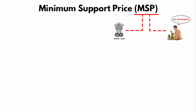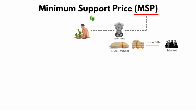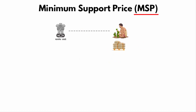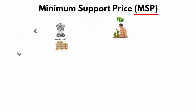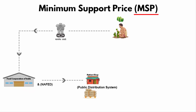MSP means Minimum Support Price. It is a system introduced in the country to protect the interest of farmers. Under this system, even if the price of a crop falls in the market, the central government will buy the crop at a fixed MSP so that farmers do not go into losses. The price decided by the central government as MSP remains the same all over the country. The government procures crops from farmers and stores the grains in warehouses of the Food Corporation of India and the National Agriculture Cooperative Marketing Federation of India, then distributes them to the poor through the public distribution system — basically the ration shop.